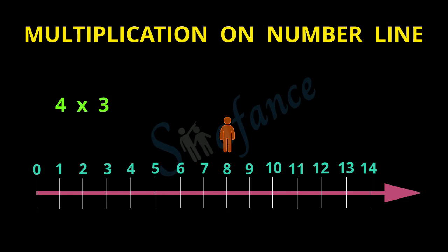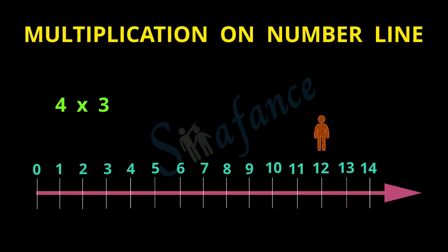The person starts traveling from digit 8 and travels 9, 10, 11, and 12. We have now repeated the travel of 4 spaces three times, so we have actually multiplied 4 by 3. The person is at digit 12, so our answer is 12. When we multiply 4 and 3, the answer is 12. This is how multiplication takes place on the number line.